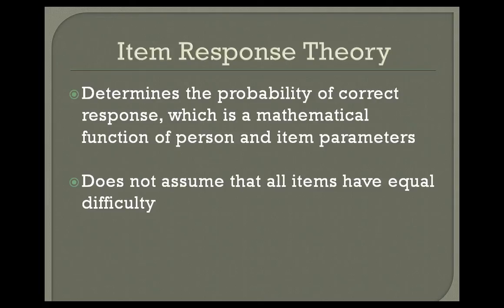Item response theory is a newer approach than classical measurement theory. It determines the probability of a correct response as a mathematical function of person and item parameters. Unlike classical testing theory, it does not assume that all items have equal difficulty — some items are more difficult and some are easier. Item response theory can also examine whether males and females, or members of different ethnic groups, respond to test items in the same way, making it one way to examine tests for bias.